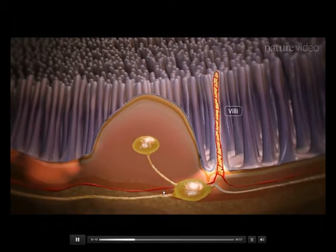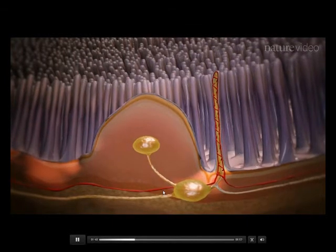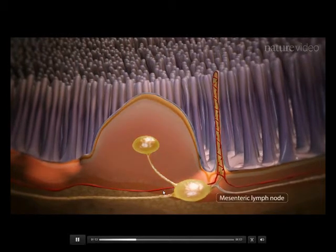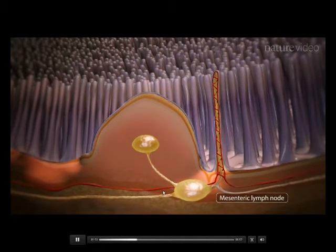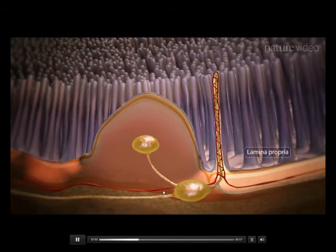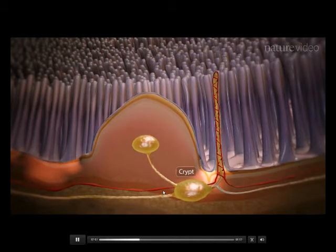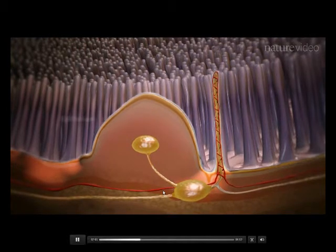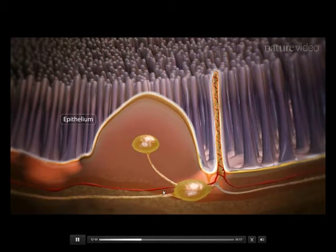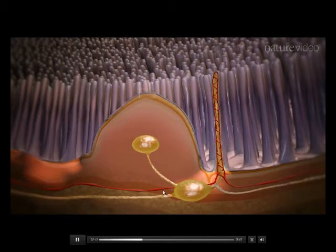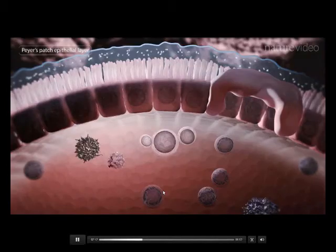The villi contain a network of blood vessels to transport nutrients from food to the rest of the body. Lymphatics from both Peyer's patches and villi drain into the mesenteric lymph nodes. Within the villi is a network of loose connective tissue called the lamina propria, and at the base of the villi are the crypts which host stem cells that replenish the epithelium. Finally, the epithelium, together with its thick overlying mucus, forms an important barrier against microbial invasion.